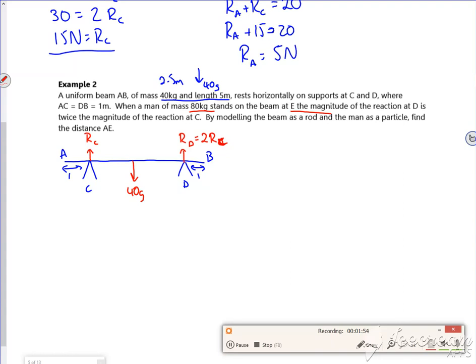Right, so let's have a think. Now I'm pressing down more on D, so the man must be closer to D than C, or else I'll be pressing down more on C. So I've got 80G acting there. But I don't know how far away it is. And it says, by modelling the beam as a rod and the man as a particle, find the distance from A to E. So this is E where the person is stood. Right, so I want this distance, so I'm going to initially call it X.